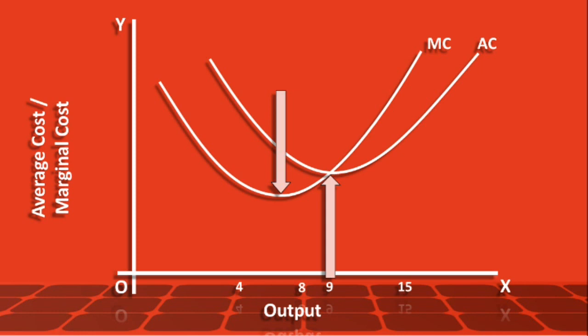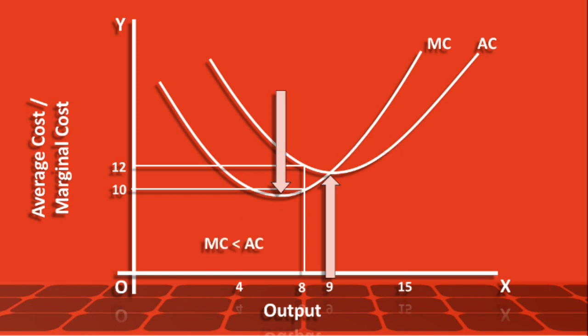This is because marginal cost is less than the average cost. To understand this better, let us fix the output at 8 units. The average cost is 12 rupees, but marginal cost is 10 rupees. Since marginal cost is less than the average cost, average cost keeps on falling, and the marginal cost curve is below the average cost curve. Our conclusion is that so long as marginal cost is less than the average cost, average cost descends downward.